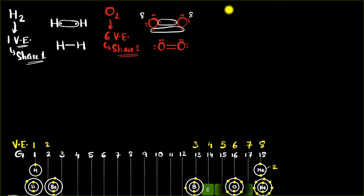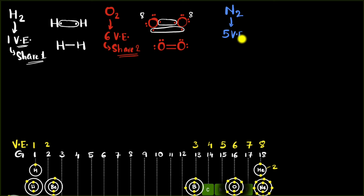Your turn — why don't you try drawing a Lewis dot structure for N₂? Pause the video and give it a try. Nitrogen has five valence electrons — that's where you always start. Following the octet rule, it requires eight electrons in its outermost shell for stability. It has five, so it needs three more. If you need three, you share three.